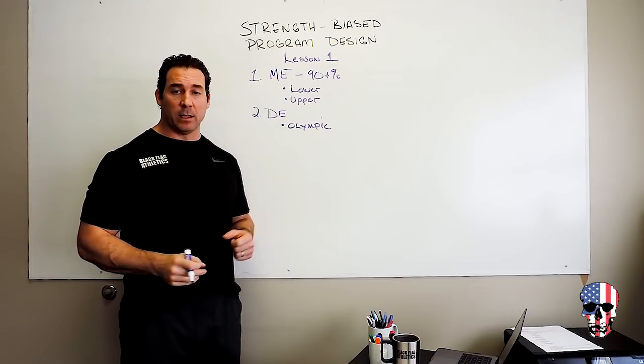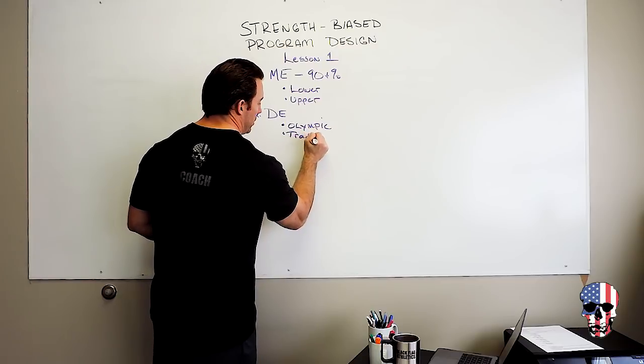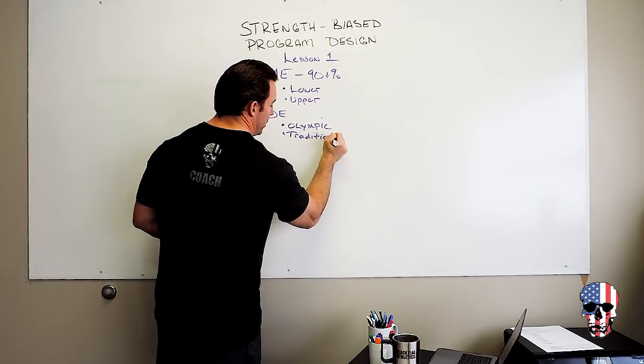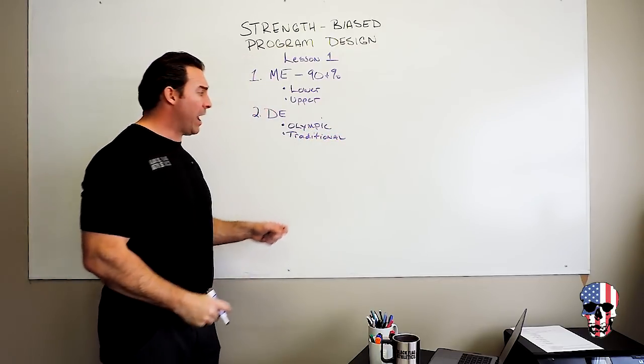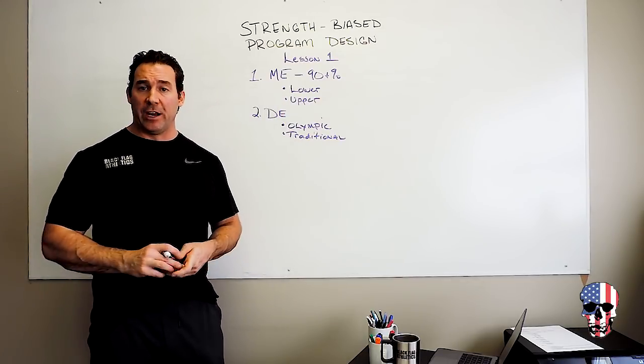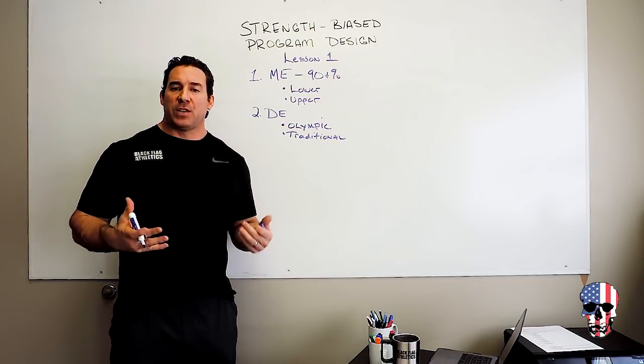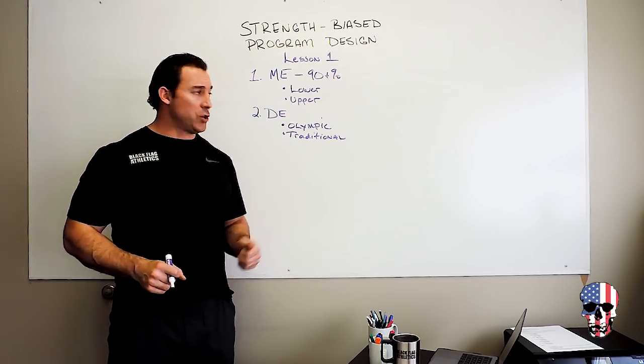What we'll generally do is complement an Olympic lift with a traditional lift. That traditional lift will complement the max effort work that we did earlier in the week. So people will ask, how do you get percentages? Where do you know you want to work at in terms of the Olympic lift?